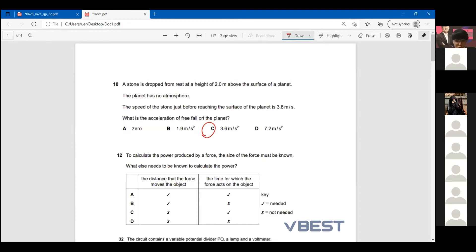So this stone dropped from 2 meter height, no atmosphere, and before reaching it is 3.8. So this is conversion of energy: mgh converts into half mv square. It's the same stone.